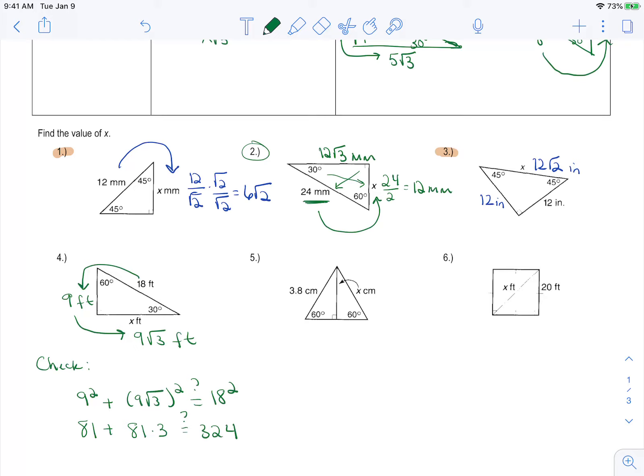And the reason, so that's 9 squared is 81. And then root 3 squared, well, that becomes, gets rid of your radical. Or it's the square root of 9, which is 3. And if I use my calculator and I do 81 plus 81 times 3, it does work out.